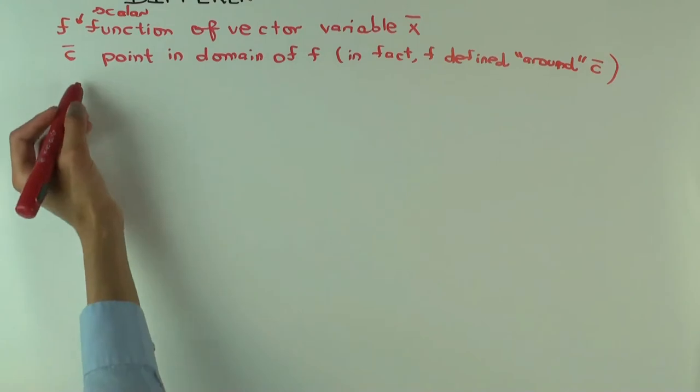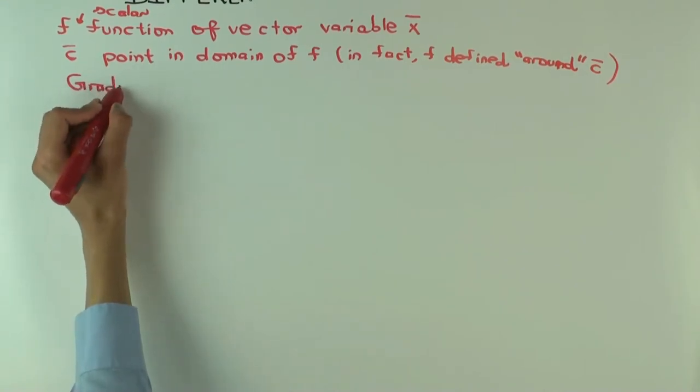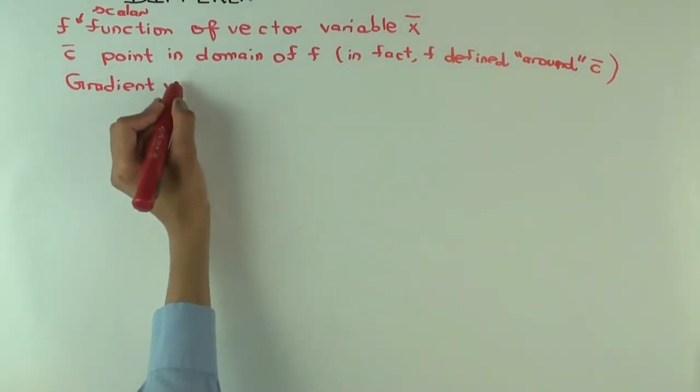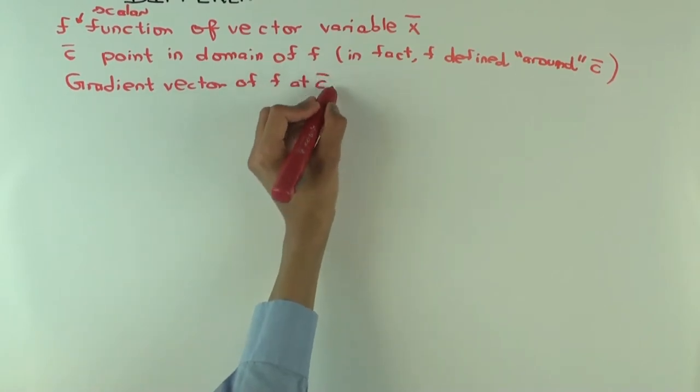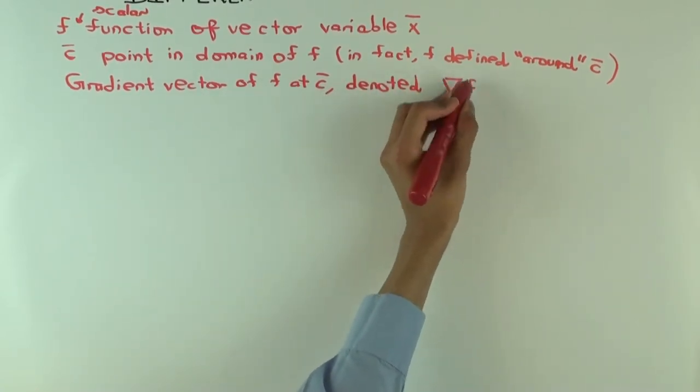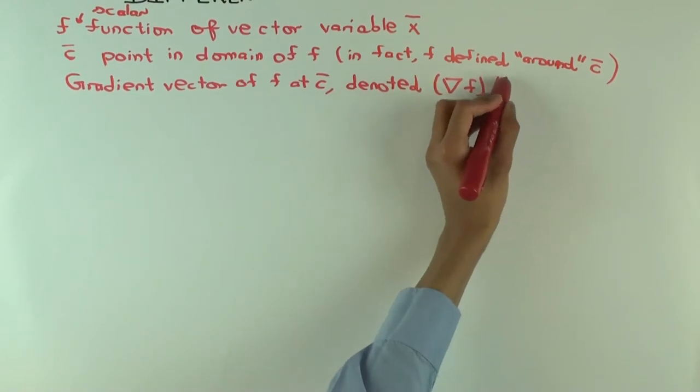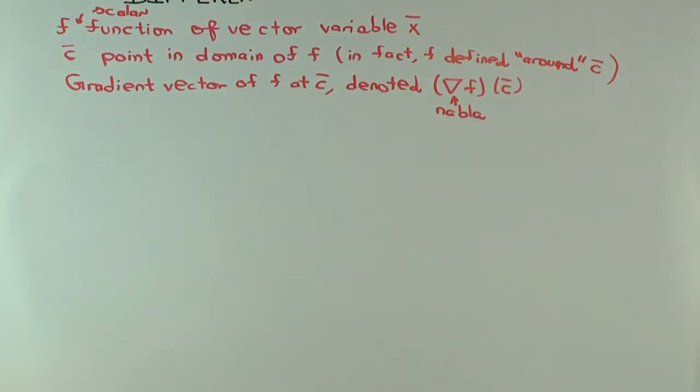So, I'm just going to tell you what the answer is. I'm going to define the derivative as what we call the gradient vector. So gradient vector of f at c is denoted, you wouldn't guess it, but let's denote it, this thing as, and this is called nabla.